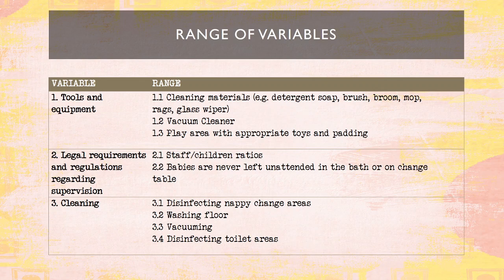Next we have the range of variables — these are the highlighted words from our element and performance criteria, further discussed to explain what those variables mean and their range. Number one, tools and equipment: cleaning materials, vacuum cleaner, play area, and bed appropriators and family. Number two, legal requirements and regulations regarding supervision — including staff and children ratios. Babies are never left unattended in the bath or on a change table.